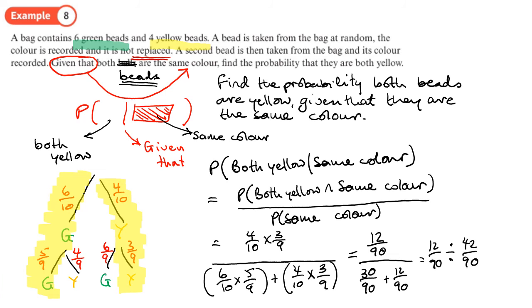We calculate 12 over 90 divided by 42 over 90 on the calculator, and we get exactly 2 over 7. So the final answer is 2 over 7.